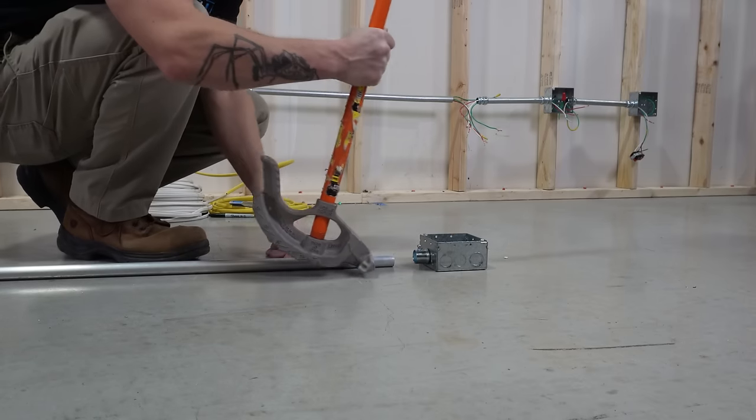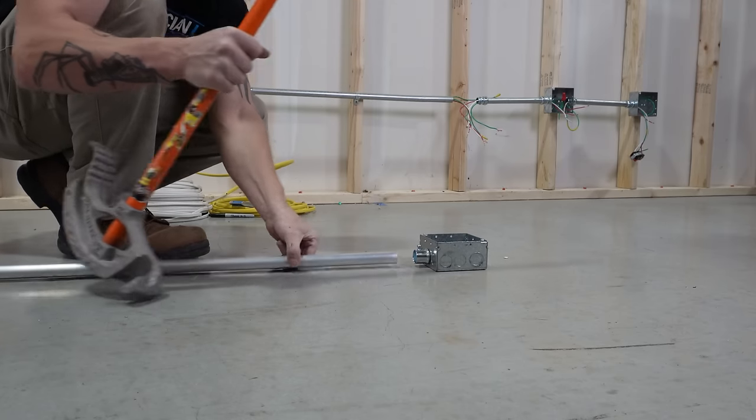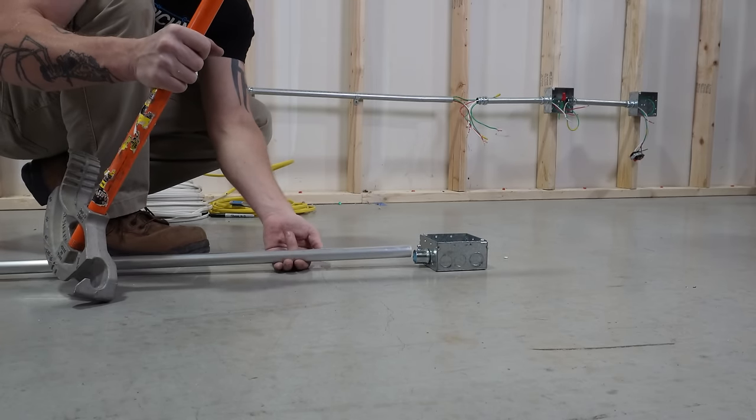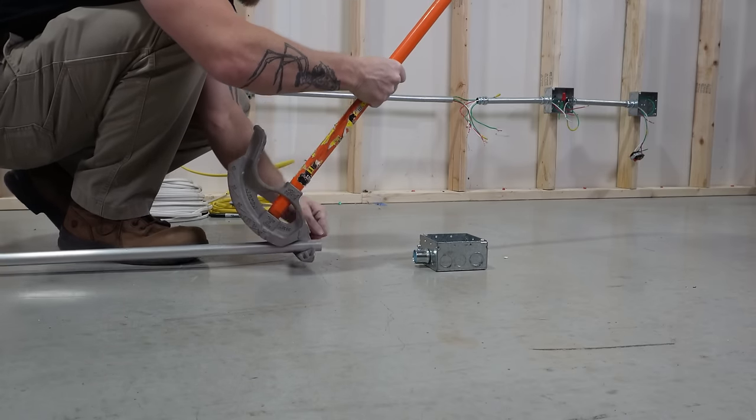Now you could come back and start way back here, but then you're going to have all of this that's above here and it's not going to come back to the ground until back here. So usually I do all my box offsets starting at the very end of the bender.